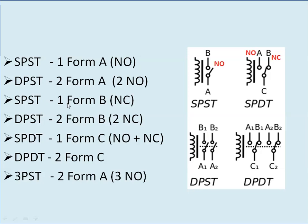Similarly for NC: if your application requires a normally closed contact, you need to select one Form B contact switch or relay, also known as single pole single throw. And for double pole single throw, if your application requires two NCs, two Form B relay or switch need to be selected.